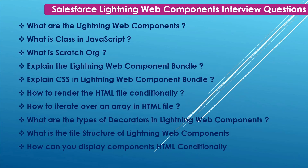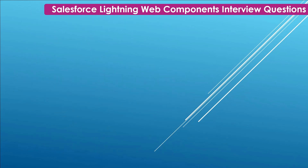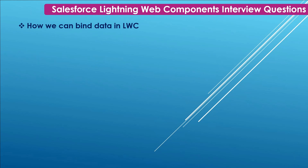Next: How can you display Lightning Web Component HTML conditionally? To render HTML conditionally, add the if:true or if:false directive to a nested template tag that encloses the conditional content. Next: How can we bind data in LWC? In the template, surround the property with curly brackets. To compute a value for a property, use a JavaScript getter in the JavaScript class — for example, get propertyName() — then access the property name.